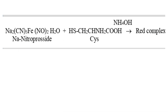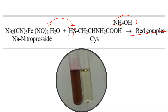Nitroprusside is going to react with cysteine in the presence of a strong alkali — you can use sodium hydroxide or ammonium hydroxide, but a strong alkali must be present. Because of this strong alkali, the SH group is released and reacts with nitroprusside to give a red-colored complex. A red or violet color indicates a positive test, while no color change is a negative test.